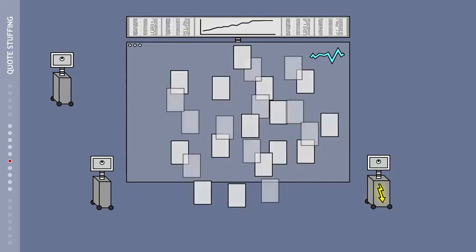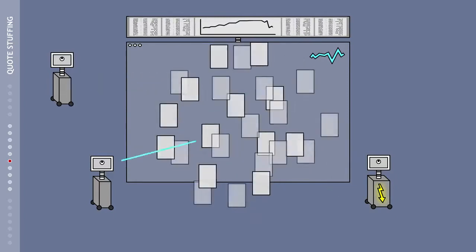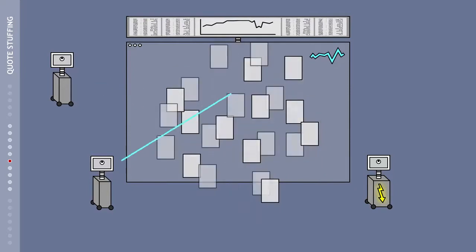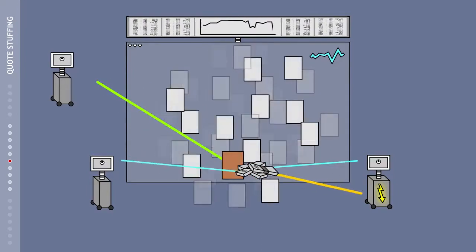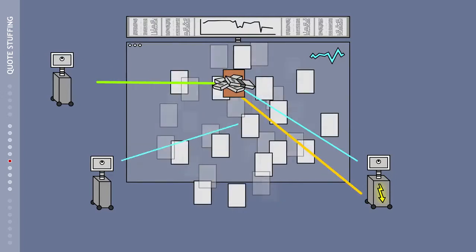This happens through so-called quote stuffing. In this scenario, a trading program makes thousands of small, unimportant offers, thereby producing a flood of information. In filtering out the unimportant information, other programs lose valuable milliseconds and respond too late to the interesting offers.